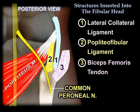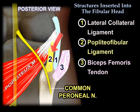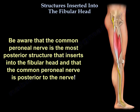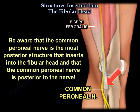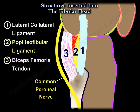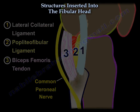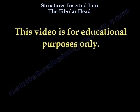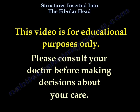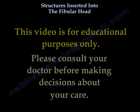So here is the arrangement of the structures again. The first structure anteriorly on the fibular head is the lateral collateral ligament, followed by the popliteo-fibular ligament, then the biceps. Be aware that the common peroneal nerve is posterior to the biceps. The most posterior structure inserted into the fibular head is the biceps.